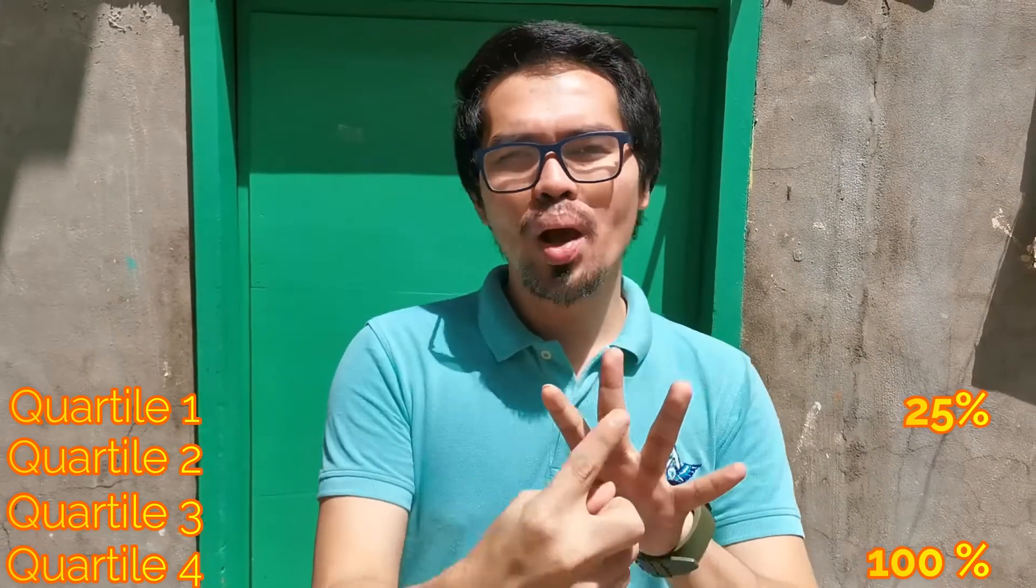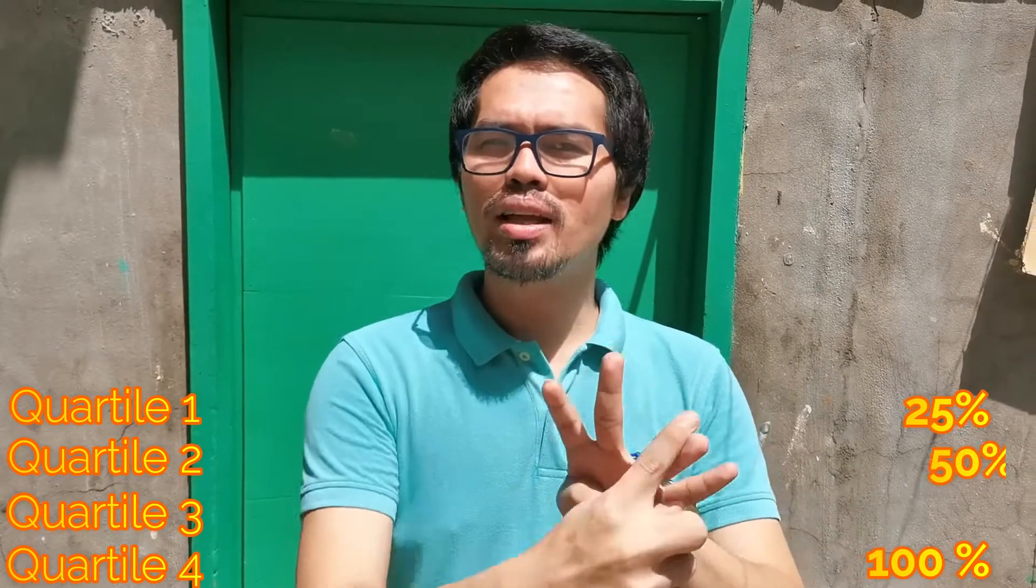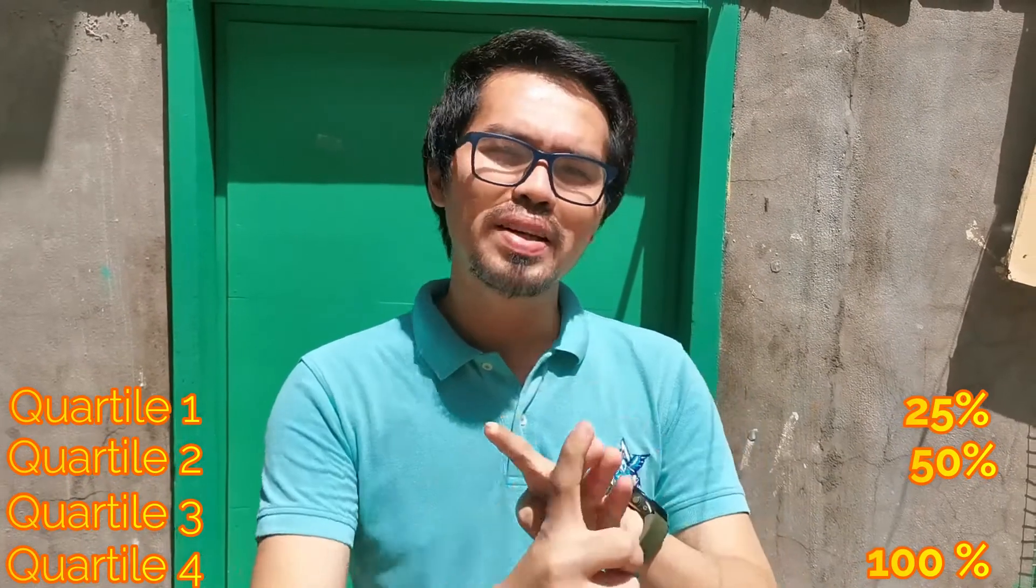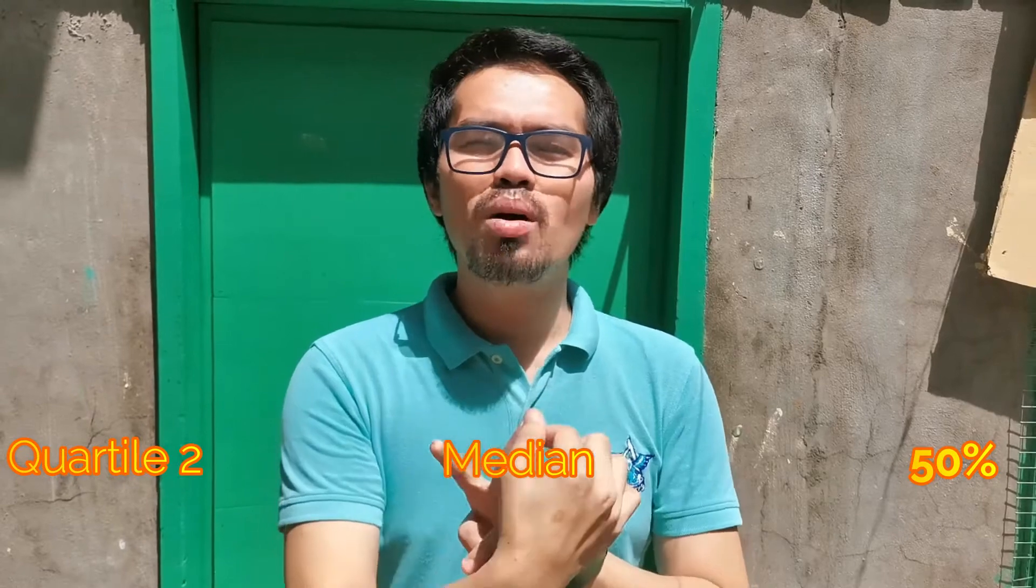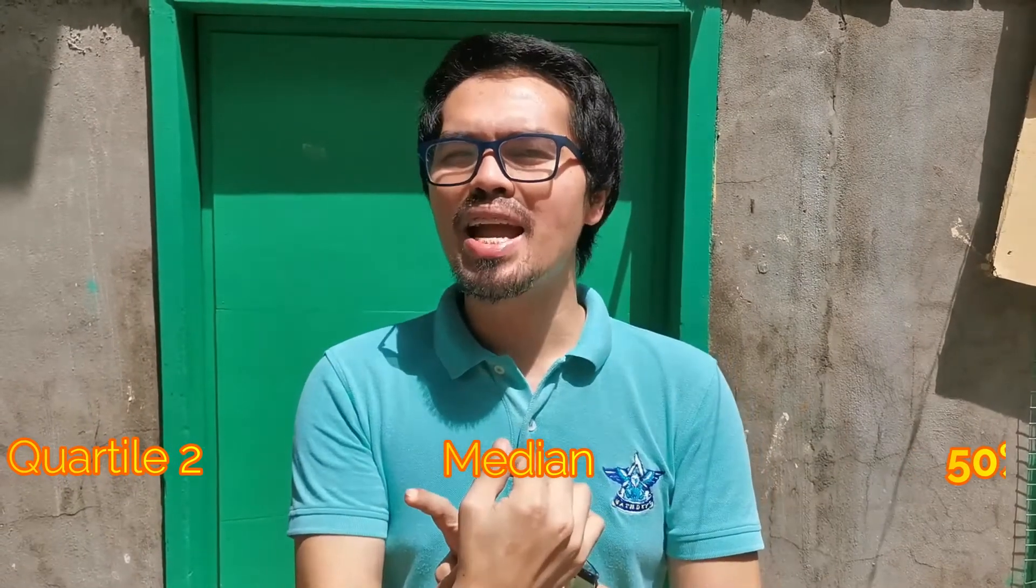Before we will have an actual example, let me just tell you that the quantile measure, specifically the quartile, it divides the dataset into four equal parts. Namely, quartile 1, quartile 2, quartile 3, and quartile 4. In fact, quartile 4 refers to the entire dataset already. Now, quartile 1 means 25% of the dataset, quartile 2 is 50% of the dataset, quartile 3 is 75% of the dataset, and finally quartile 4 is the whole dataset. No wonder that quartile 2 is equal to the value of the median. After all, median is the middle part of the dataset.